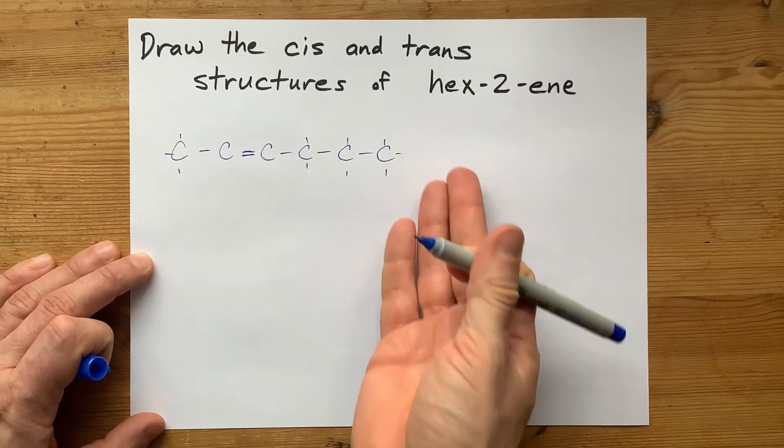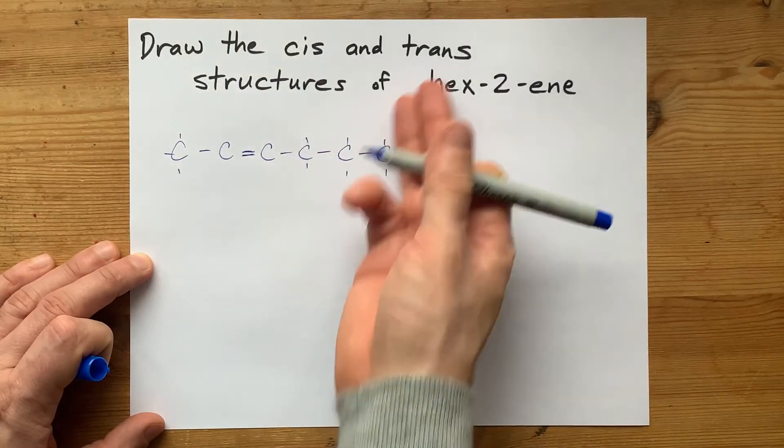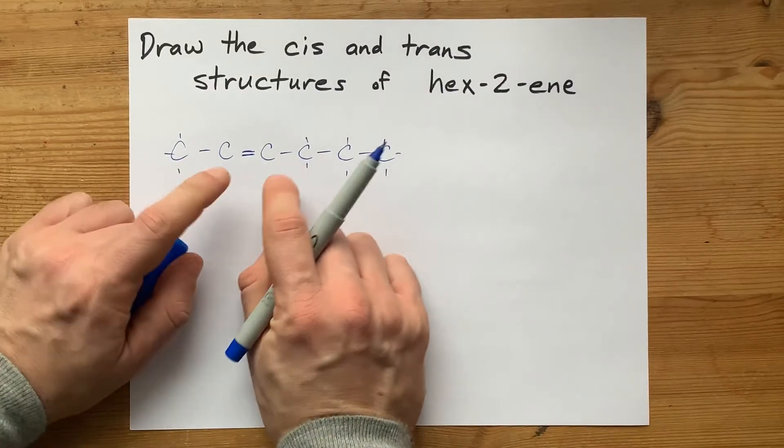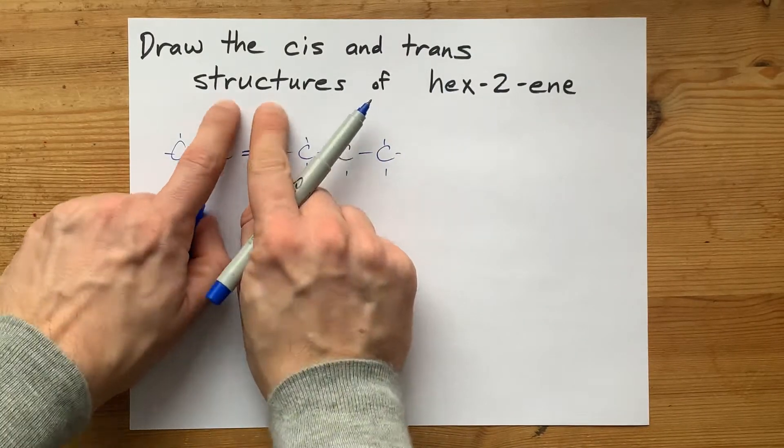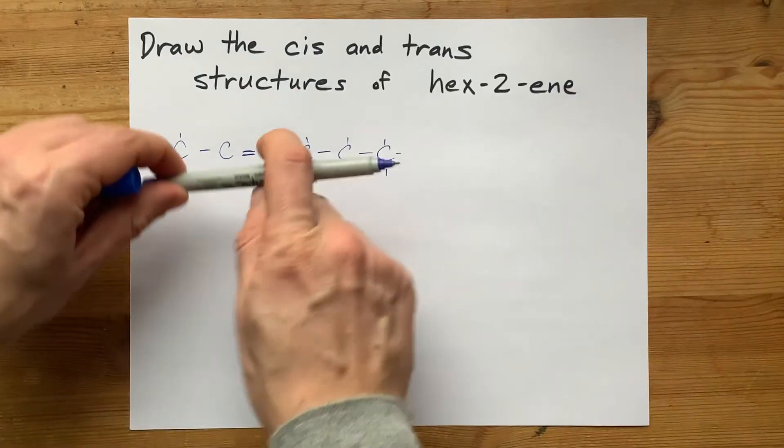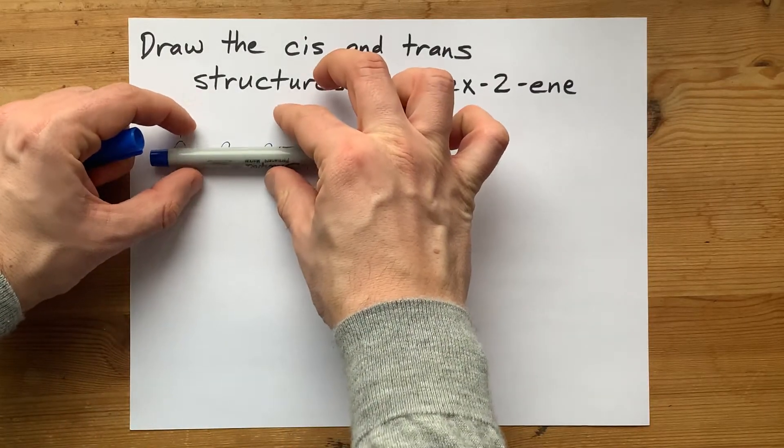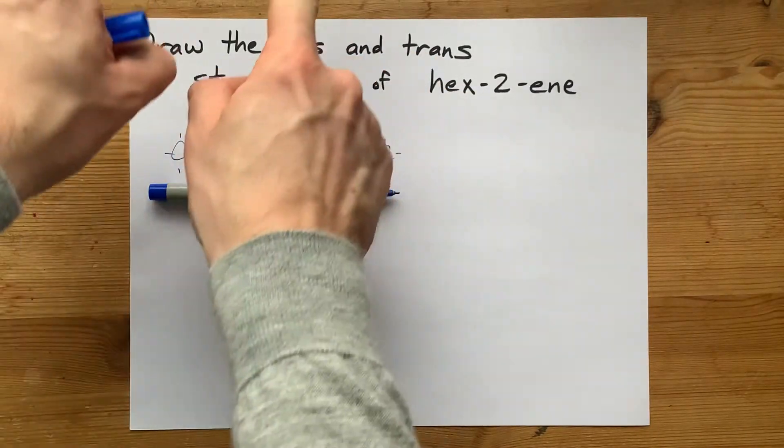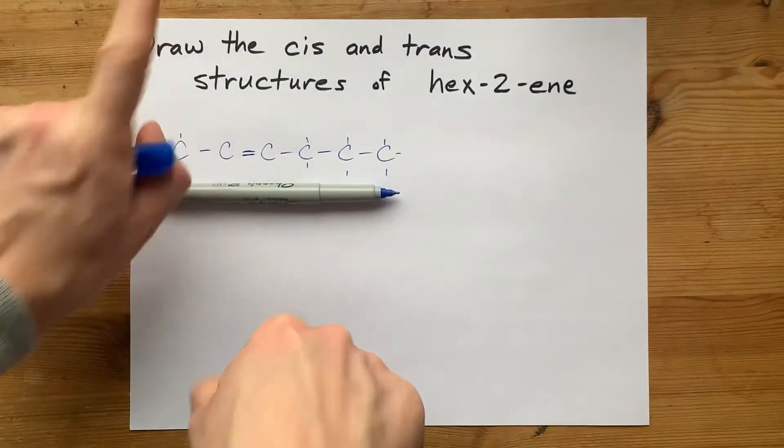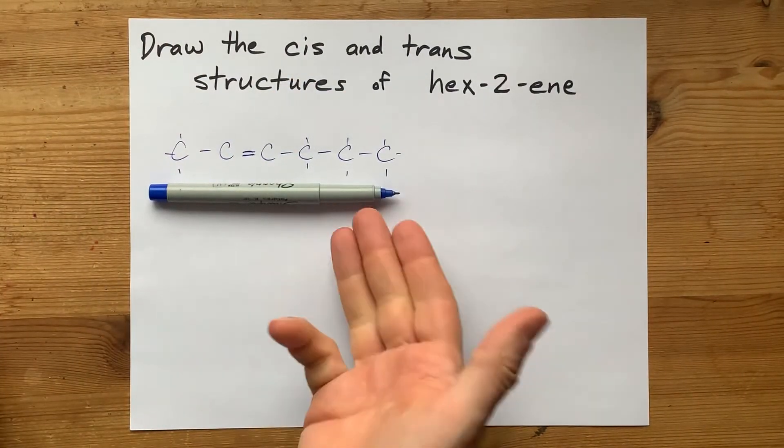And you probably see what's going to be cis and trans to each other. You have to decide if you're going to put the hydrogens both on the same side of this double bond. Let's slice it this way. Are you going to put the hydrogens on the same side of the double bond or opposite sides of the double bond? You get to choose.